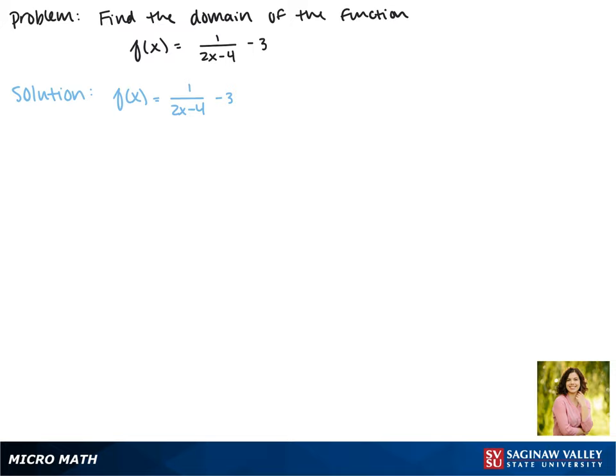The domain restriction for these functions is that the denominator can never be equal to 0 because we can't divide by 0. So we have to figure out what x value will give us a 0 in the denominator.